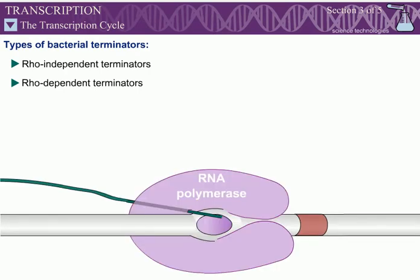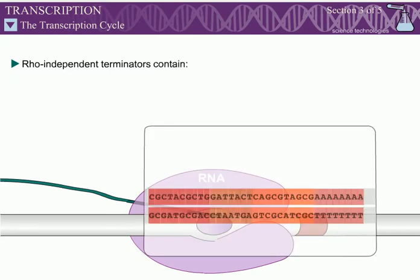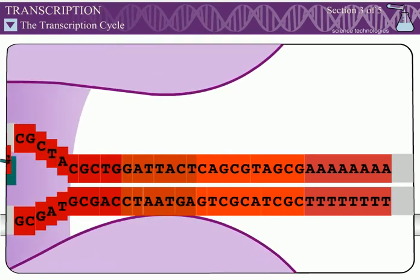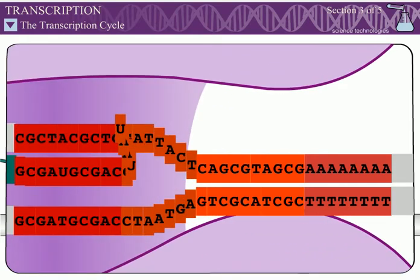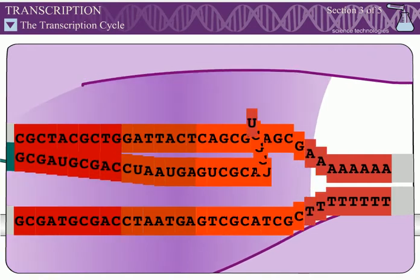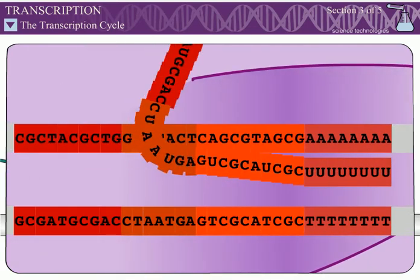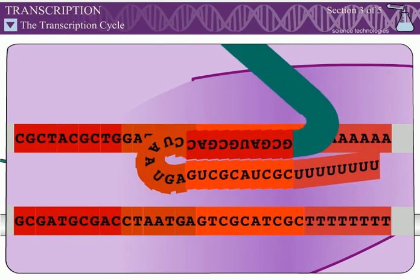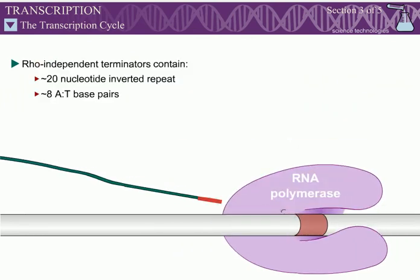Rho-independent terminators, also called intrinsic terminators, consist of two sequence elements: a short inverted repeat of about 20 nucleotides, and a stretch of about 8 AT base pairs. The RNA that results from the inverted repeat sequence is able to base pair with itself and forms a hairpin structure. The hairpin then disrupts the elongation complex. AU base pairs are the weakest of all base pairs, allowing the RNA to easily dissociate from the DNA.